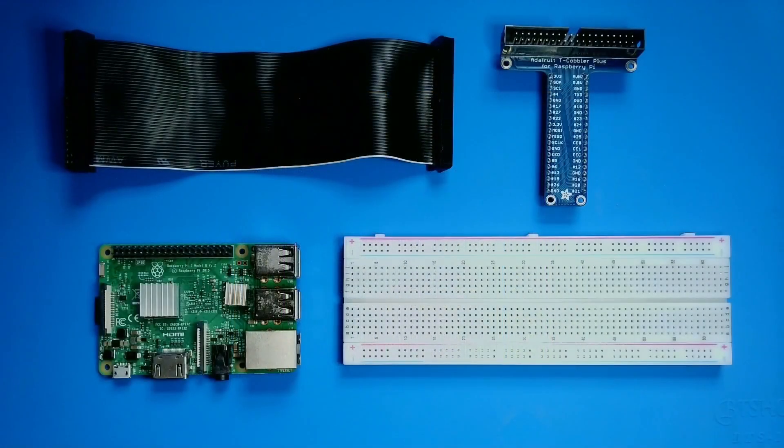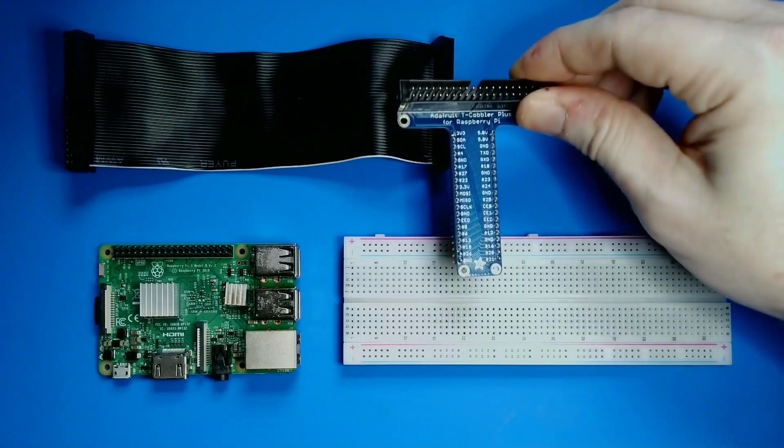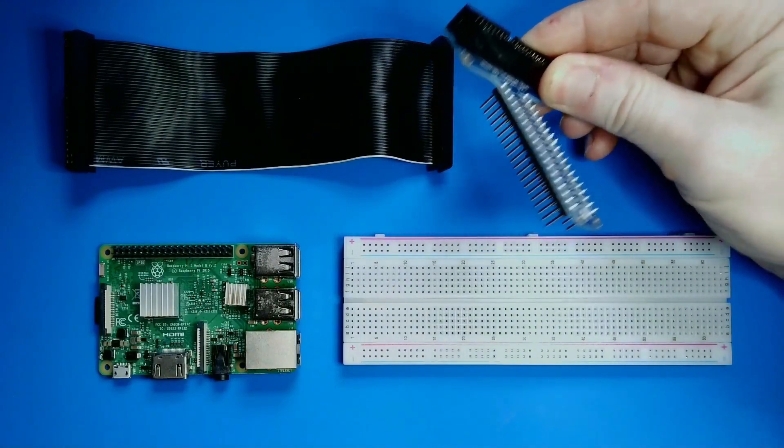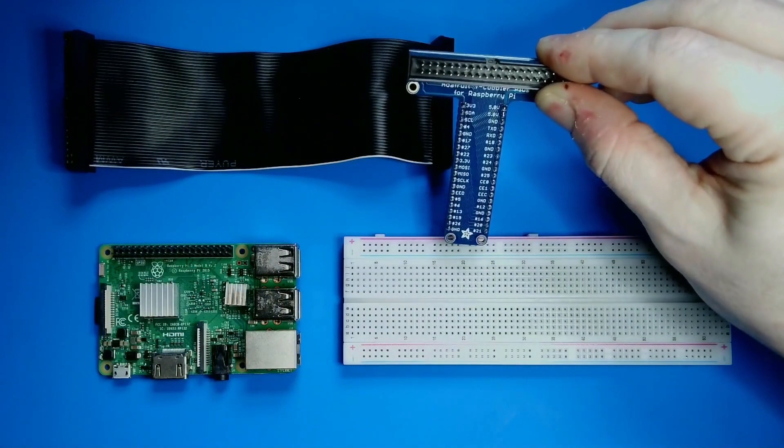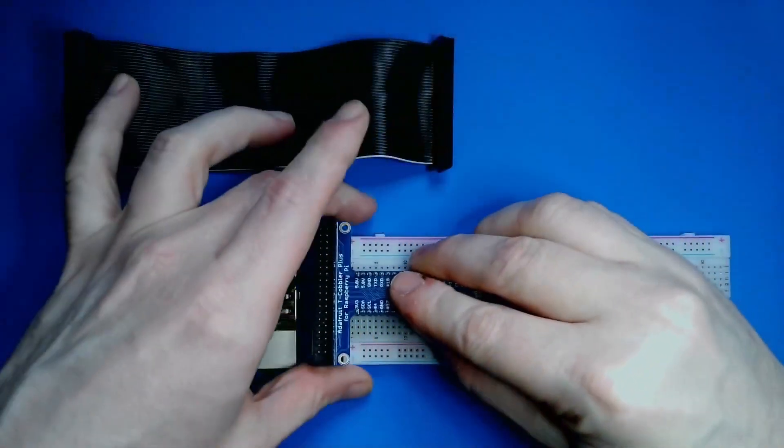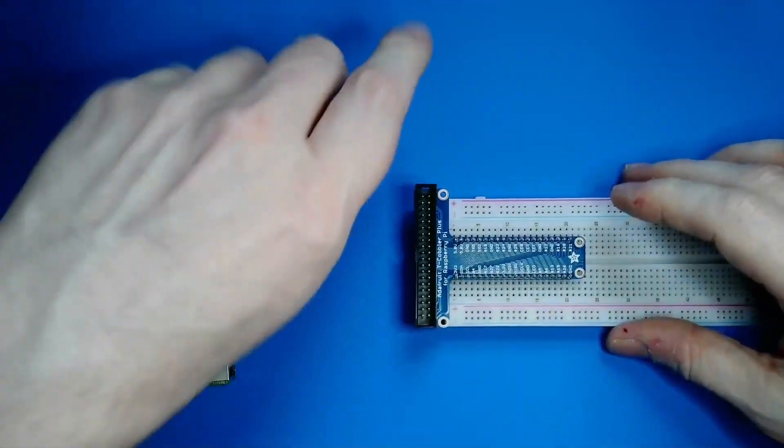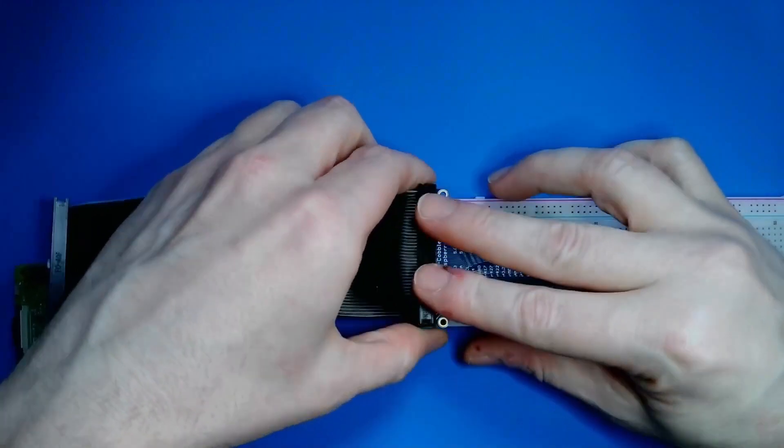I could connect components directly to my Raspberry Pi, but I like to use a breadboard because it enables rapid prototyping. To make it even easier, I'll use a GPIO breakout board like this. When combined with a ribbon cable, it connects the Pi's GPIO pins to the breadboard and it includes handy labels for each pin. Let me get this all connected.